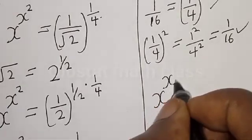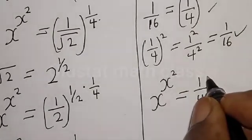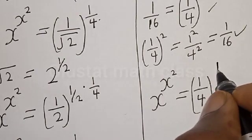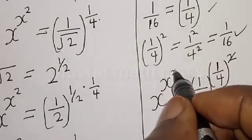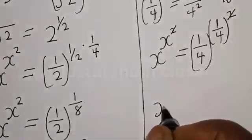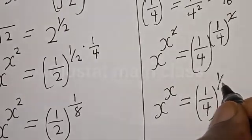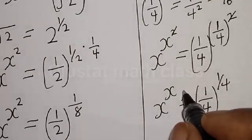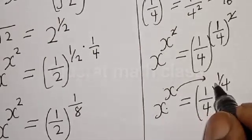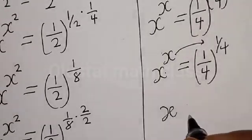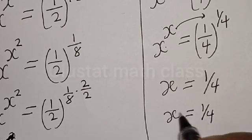Now let's substitute back into the equation. We have x raised to power x raised to power x squared is equal to 1 divided by 4, raised to power 1 divided by 4, all squared. We can see that the square cancels the square, and we are left with x raised to power x is equal to 1 divided by 4, raised to power 1 divided by 4. By comparing, we have x is equal to 1 divided by 4. Therefore x is equal to 1 over 4.